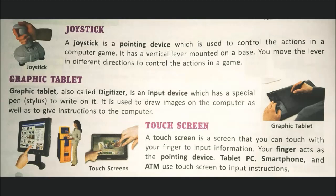Next is touch screen. A touch screen is a screen that you can touch with your finger to input information. Your finger acts as the pointing device. Tablet PCs, smartphones, and ATMs use touch screens to input instructions. For example, normal touch phones, tablets, and ATM machines — all these are touch screen pointing devices.